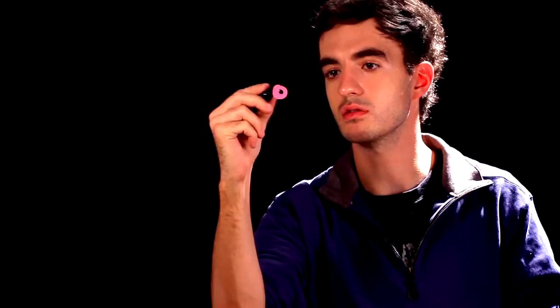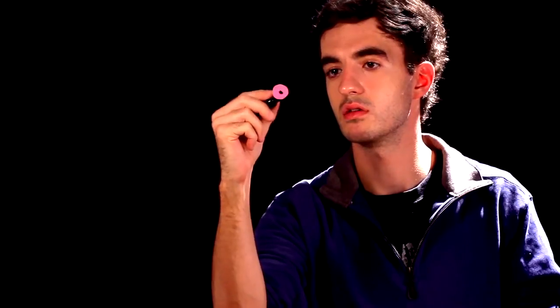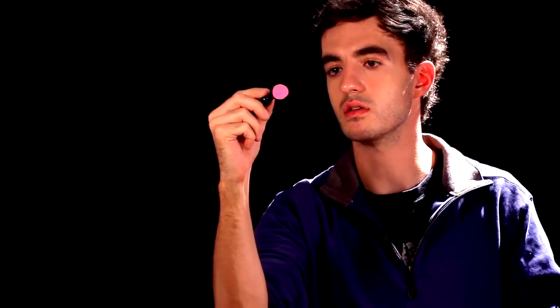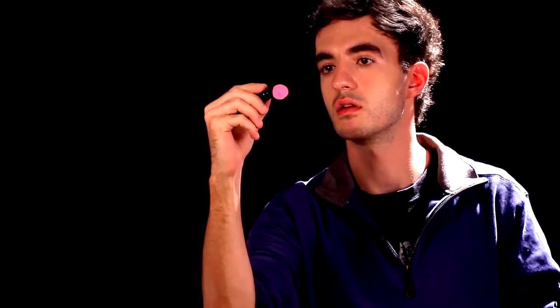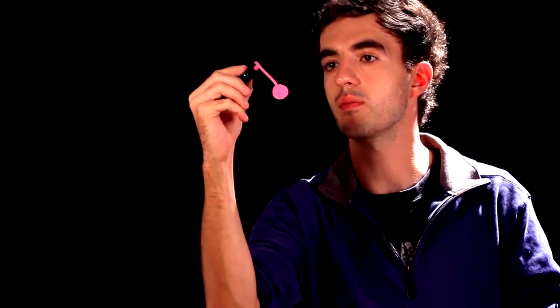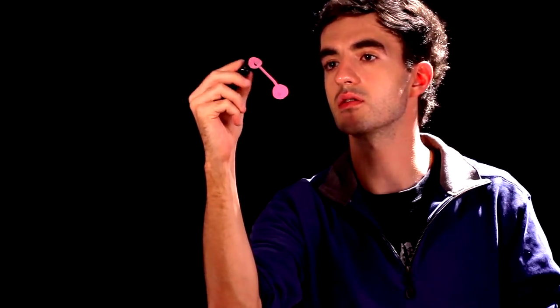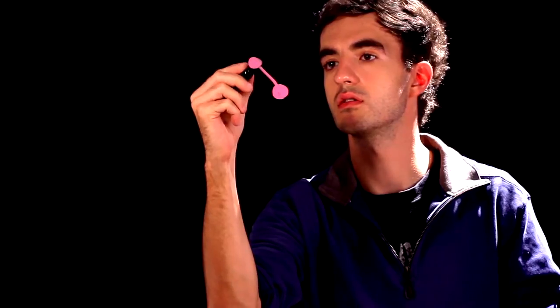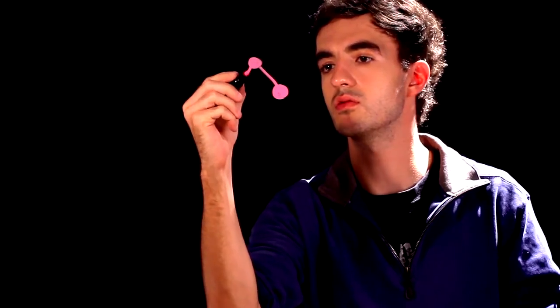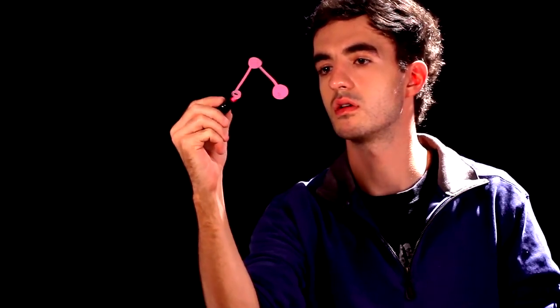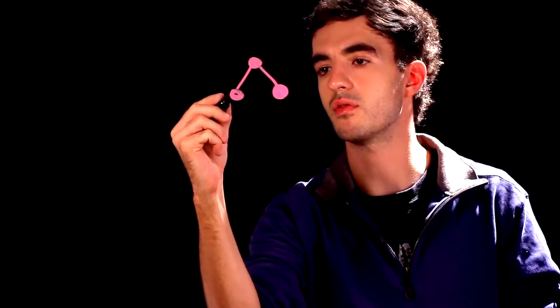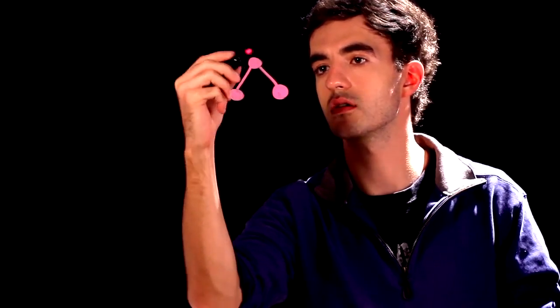So we start off with the carbon, draw circles, and color those in. Draw a line up and circle for 2, line down for 3.